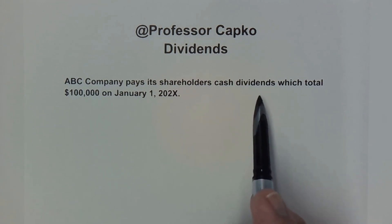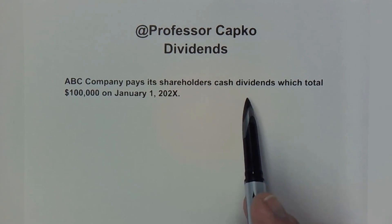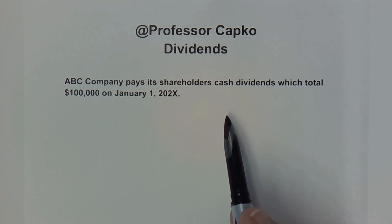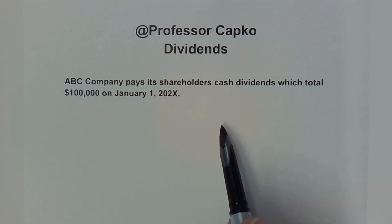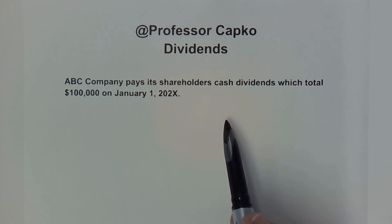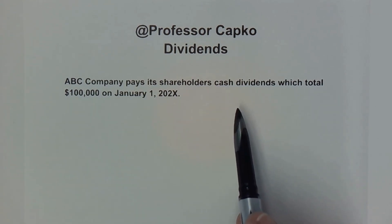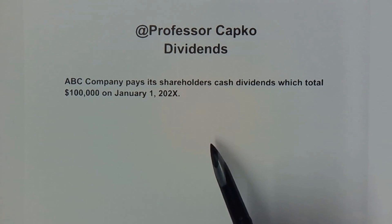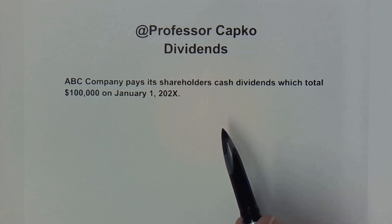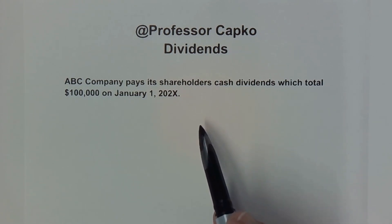First of all, dividends are not an expense. Dividends are a way of paying a portion of the profits of the company to its shareholders. Shareholders own the company — there may be a few shareholders, even only one, or you can have thousands or millions of shareholders. One of the reasons they purchase shares of stock is to receive dividends, which are a portion of the profits. A company will calculate its profits at the end of a period and then oftentimes share a portion of those profits with each and every one of its shareholders.